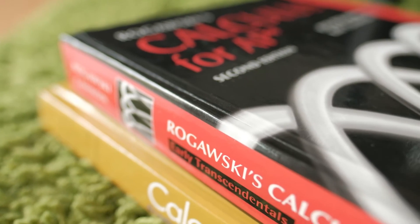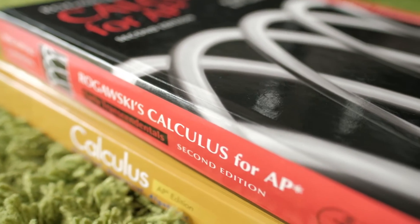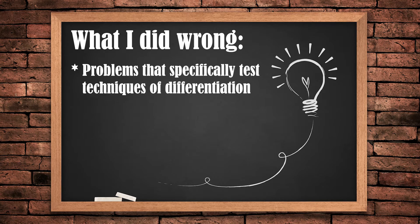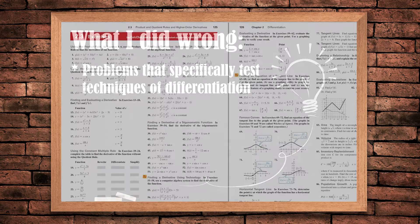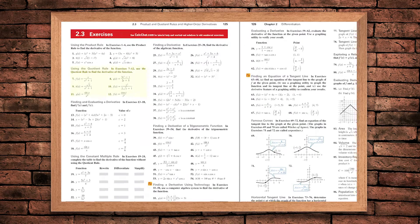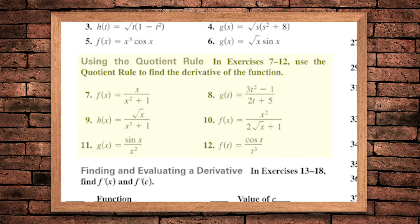Firstly, I'll share what I did wrong the first year and this is the reason we have to use diverse material. I did problems that specifically test techniques of differentiation. The worst scenario, what we can give them is to say use the quotient rule, use the product rule. They are never explicitly asked this in reality. But perhaps good at the beginning.